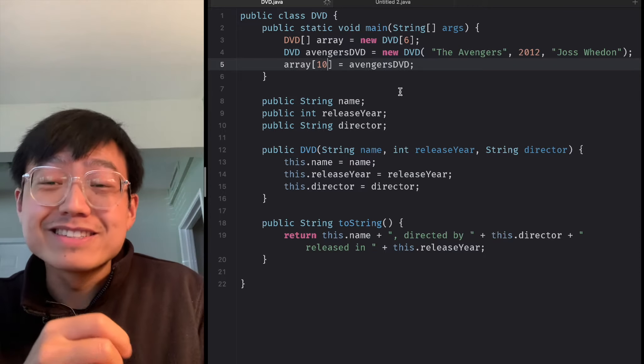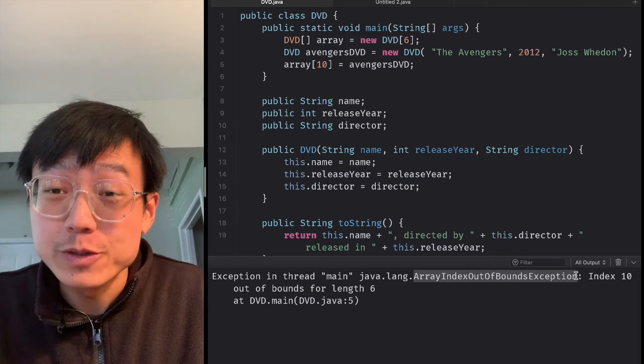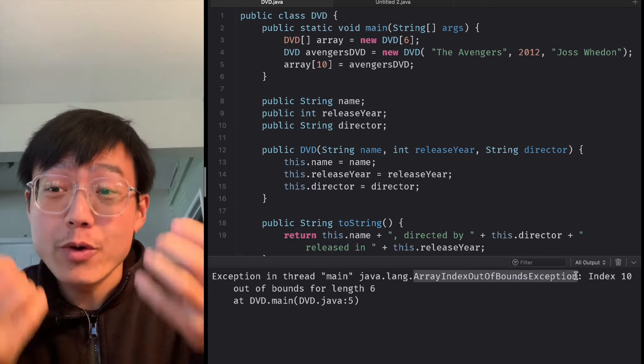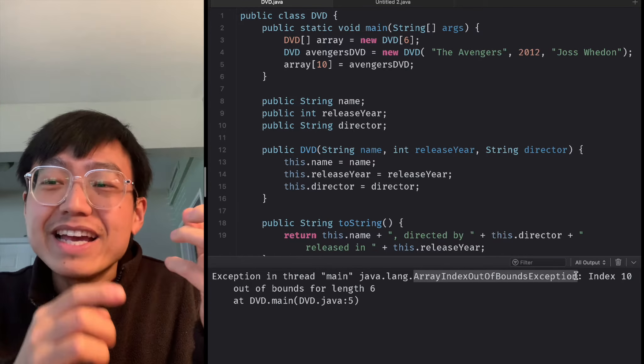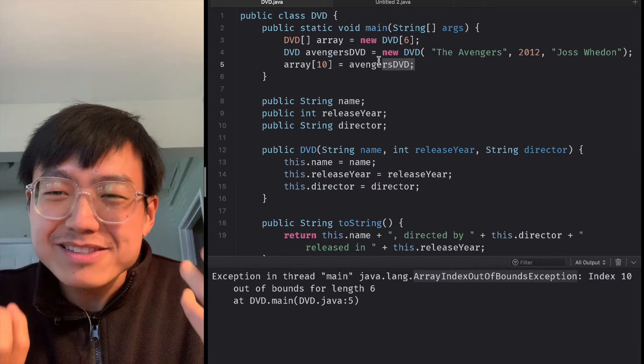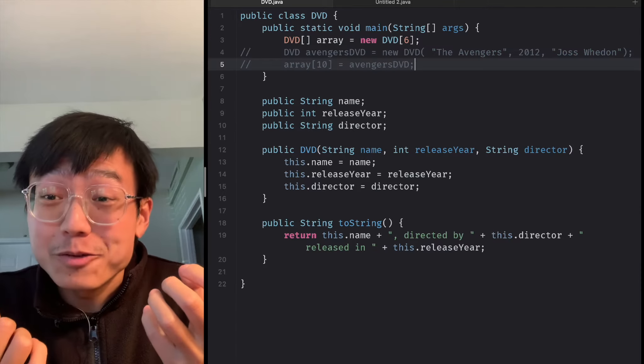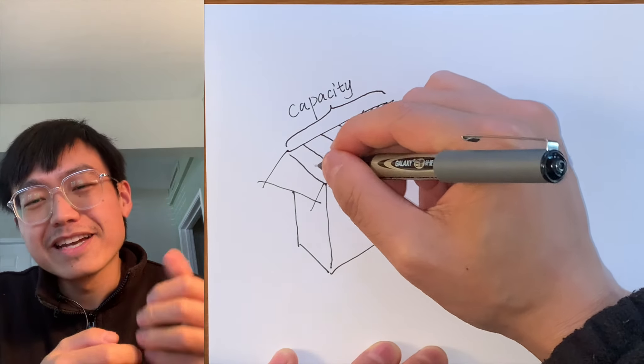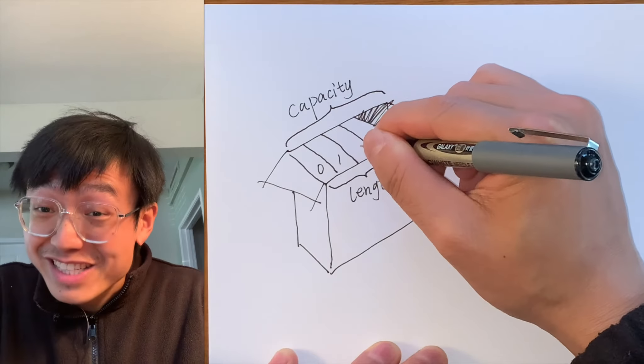Now trying to put any array anywhere else, such as array at negative 3, array at 6, array at 100, will cause your code to crash with an array index out of bounds exception. The array's capacity must be decided when the array is created. The capacity cannot be changed later.